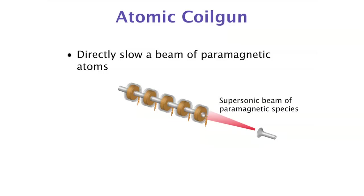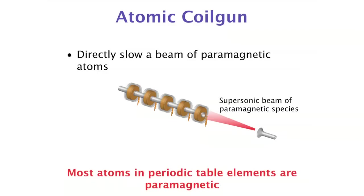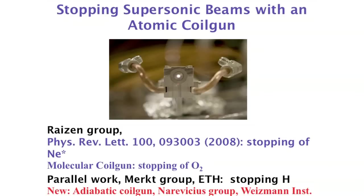If atoms are paramagnetic — meaning they have a magnetic moment from an unpaired electron — we can use a time sequence of pulsed magnetic fields to stop them. We know the time of flight to the first coil, turn it on prior to arrival, and the atoms see a magnetic hill, climbing it and slowing down. We then switch off the field very fast, removing that kinetic energy. One coil is not enough, so we build a whole series — a decelerator for neutral particles.